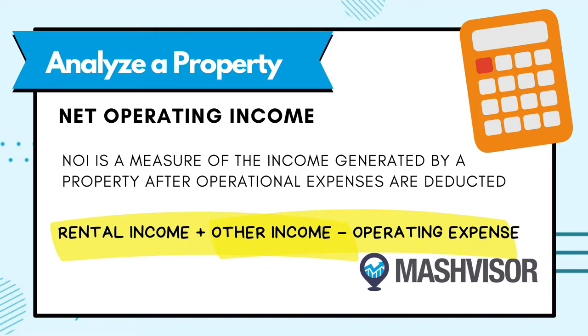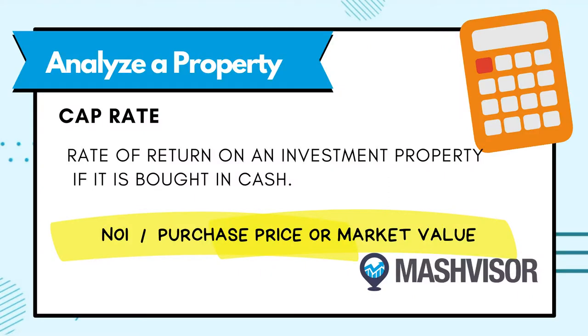Net operating income, or NOI, is a measure of the income generated by a property after operational expenses are deducted. The formula is: rental income plus other income minus operational expenses. Cap rate is the possible rate of return on an investment property if it's bought in cash. It's computed by dividing the property's net operating income, or NOI, by the purchase price or market value.